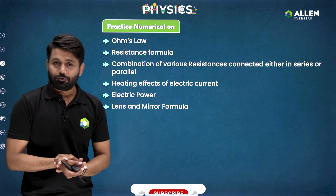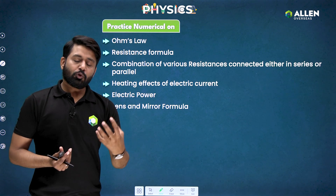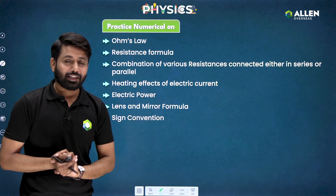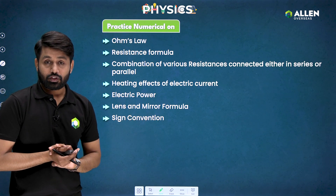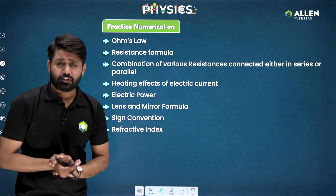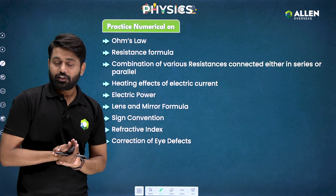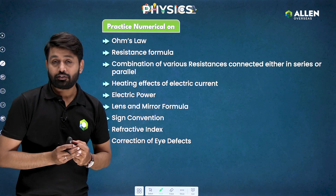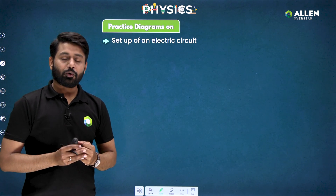From Reflection and Refraction of Light, revise lens and mirror formula. You must know the sign convention — without it you cannot solve any question based on lens and mirror formula. Know the sign for u, v, and f. Refractive index related questions are also important. For correction of eye defects like myopia and hypermetropia, numericals can also be asked from this topic.